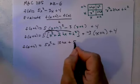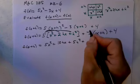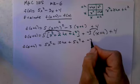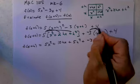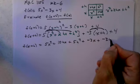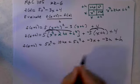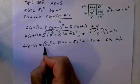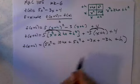5 times h² is 5h². Plus negative 3 times x is negative 3x. Plus negative 3 times h is negative 3h plus 4. All of this is f(x+h).